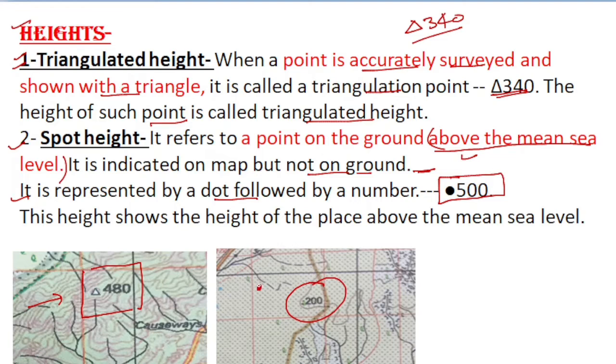Here the dot is followed by a number. This number indicates the given height of a particular place above mean sea level, and it is always represented in meters.